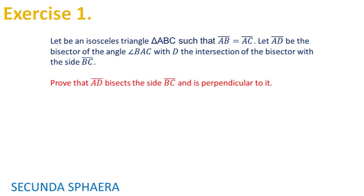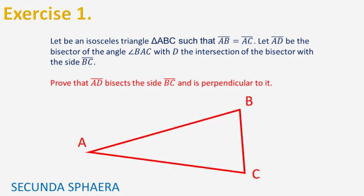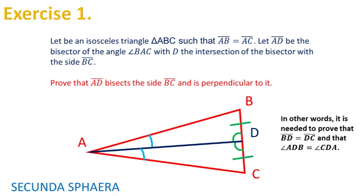Let me give you context for this problem. We draw our triangle, we label its vertices, we draw the bisector of the angle BAC, and we label the point D. Then to solve the problem it is required to conclude that the segments BD and DC are equal and that the angles ADB and CDA are equal.